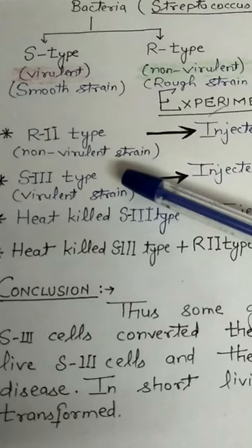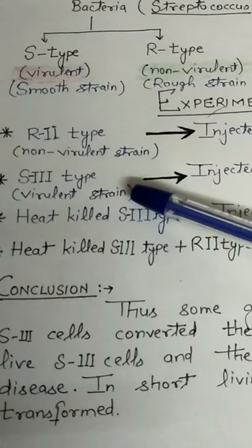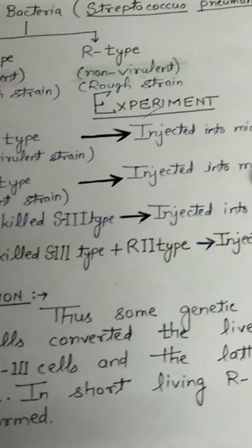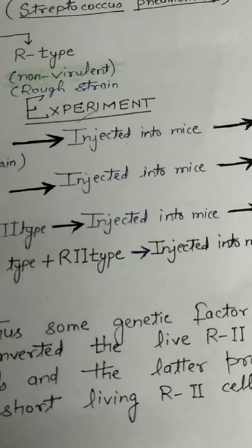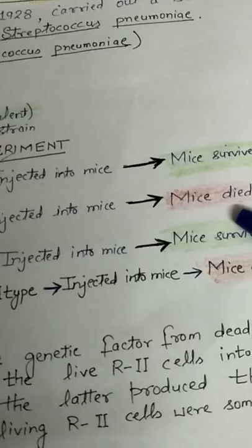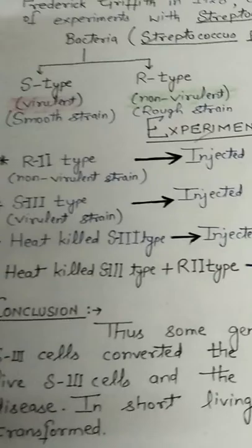In the second case, he took S3 type bacteria, the virulent strain. When he injected S3 type bacteria into mice, the mice developed pneumonia and died. As per expectation, mice died.